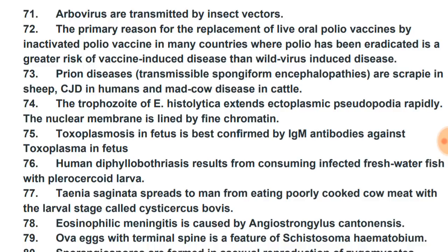Prion diseases — transmissible spongiform encephalopathies — include scrapie in sheep, Creutzfeldt-Jakob disease in humans, and mad cow disease in cattle. Creutzfeldt-Jakob disease in humans is caused by prions and is a spongiform encephalopathy.